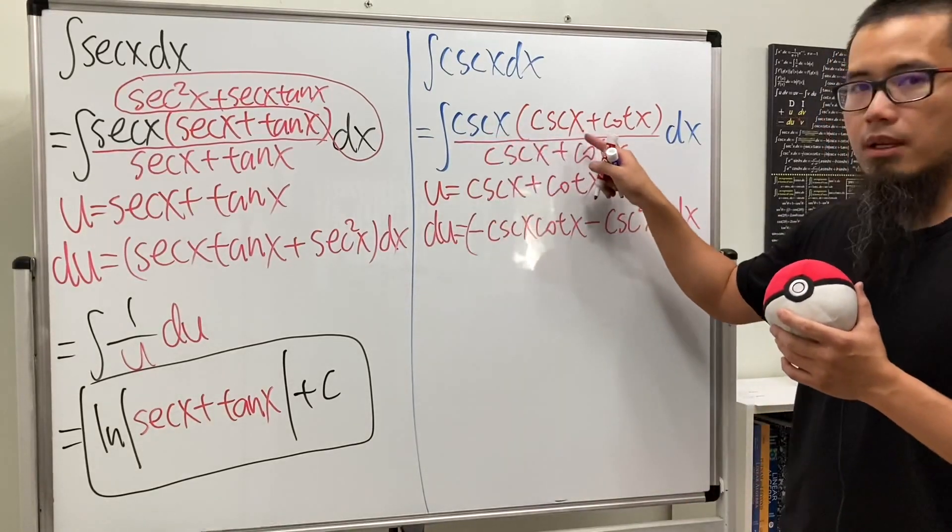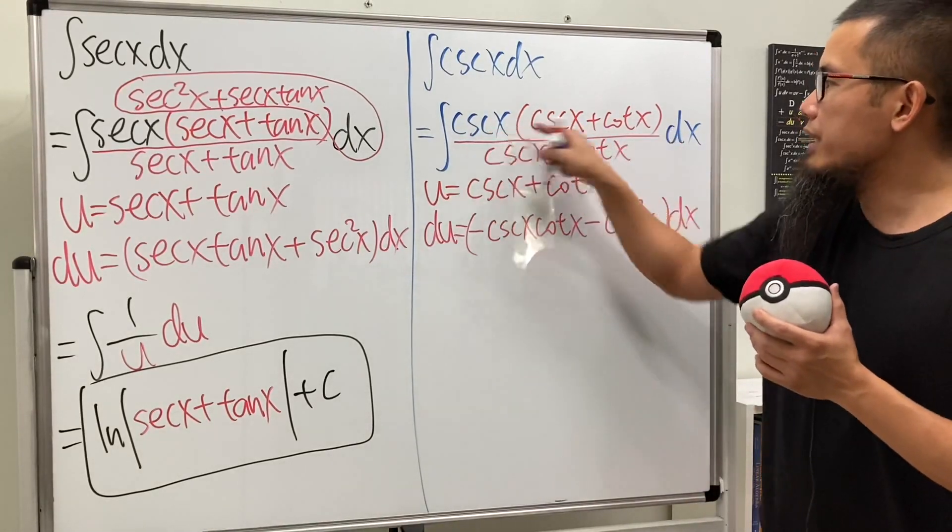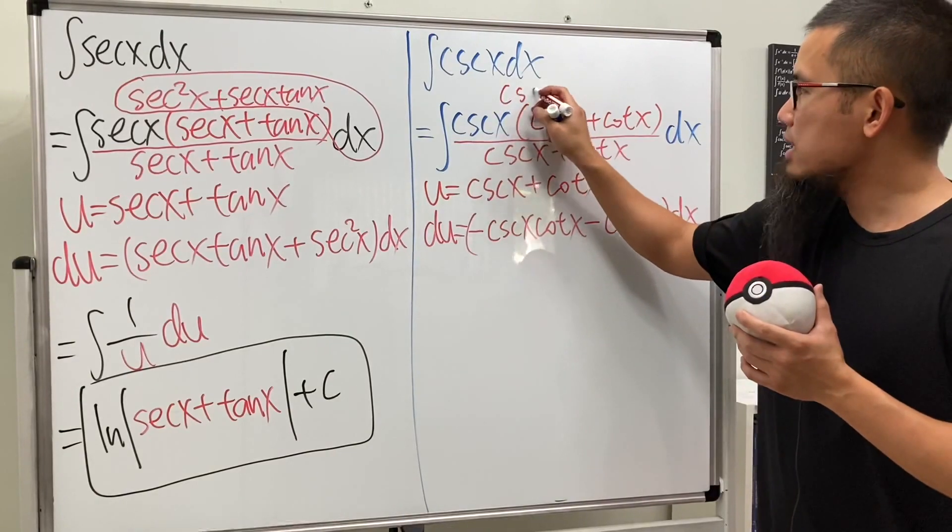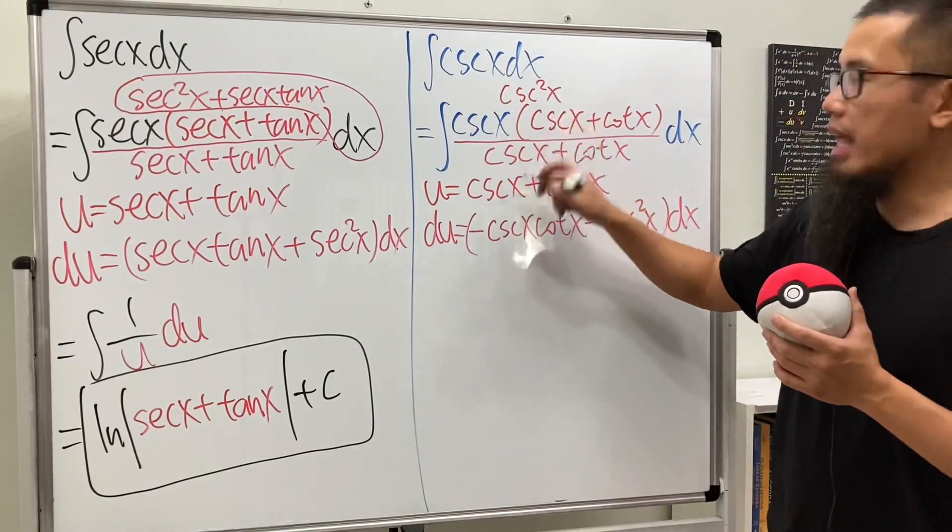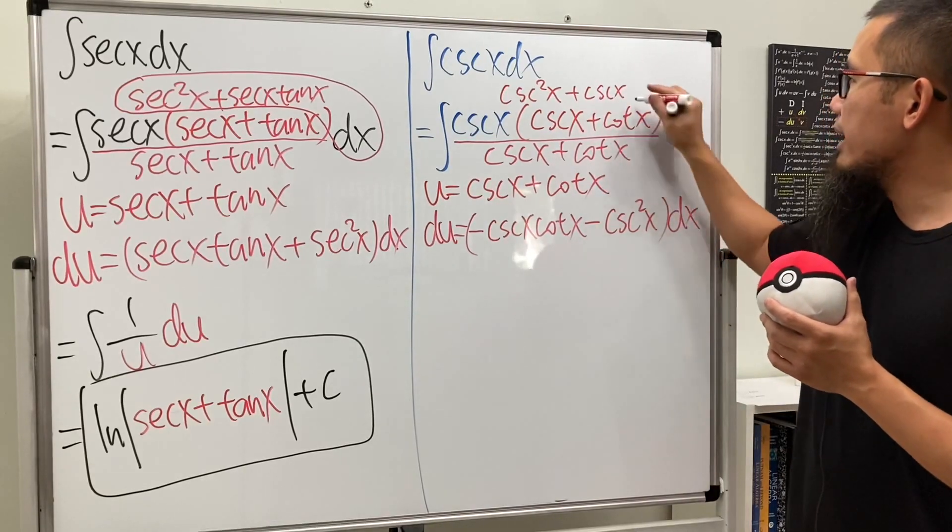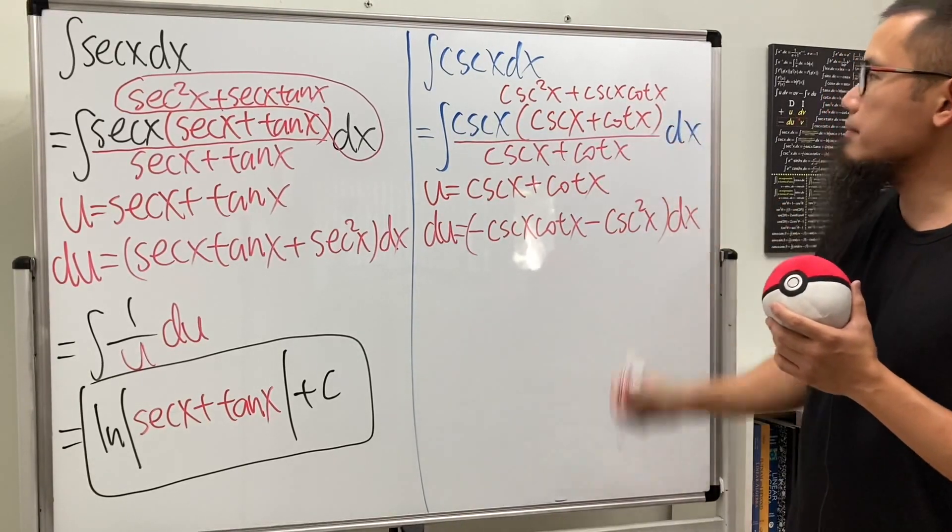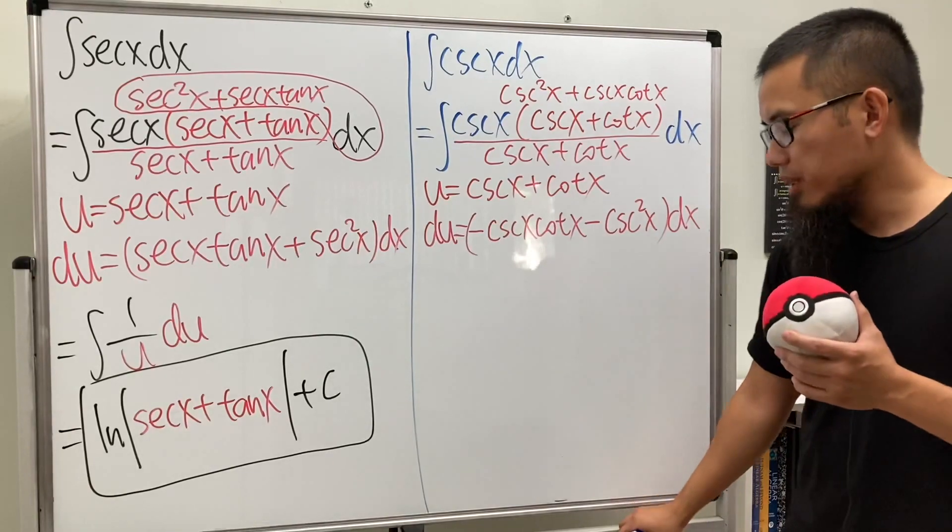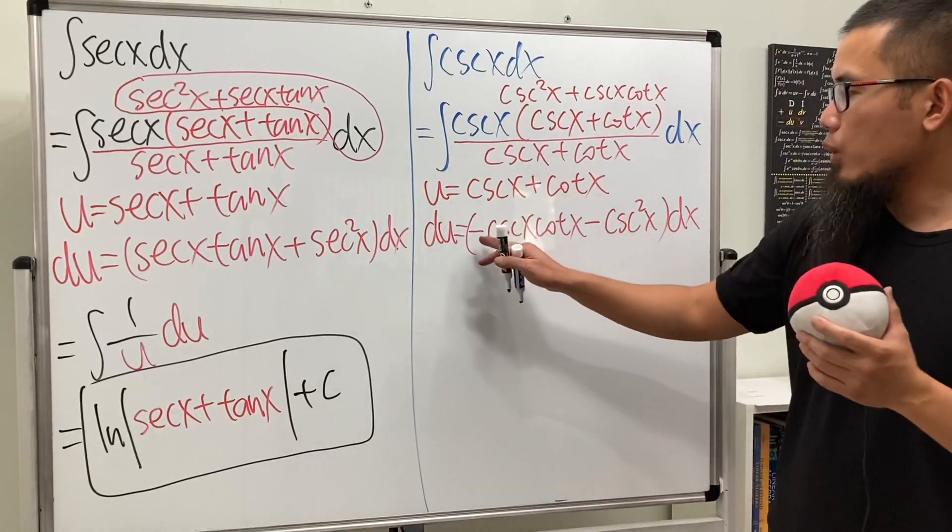On the top, when we multiply this out, we get positive cosecant squared, and then this times that is plus cosecant x and cotangent x. So here is what we will have to do. You see, we have negative, negative.